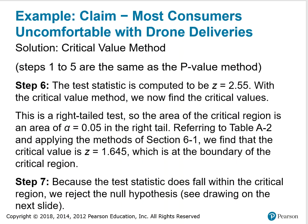This is a right-tailed test, so the area of the critical region is alpha equals 0.05 in the right tail. Refer to table A2 and apply the methods of section 6.1. You will find that the critical value is z equals 1.645, which is at the boundary of the critical region.